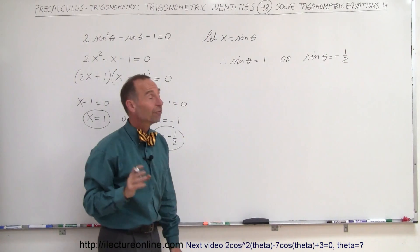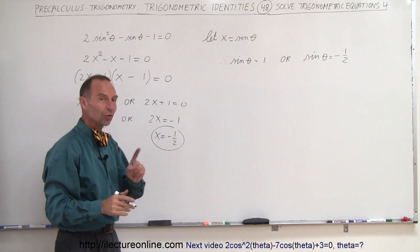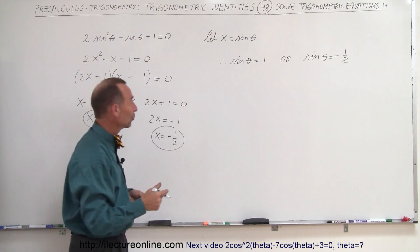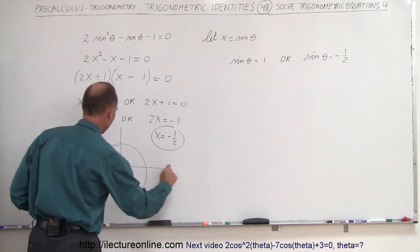So for what values of theta do I get the sine of theta equal 1? Well, there's only 1, that's where theta is pi over 2. So if you look at the unit circle, like that.